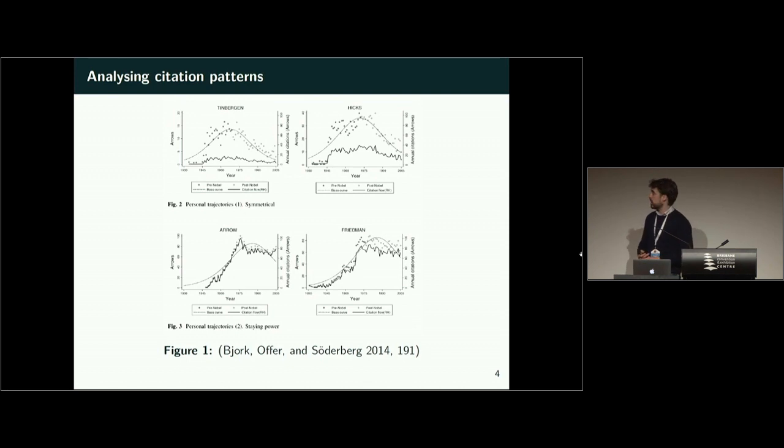And there are a few things what you can do with it. For example, you can do citation analysis. Björk Offen Söderberg analyzed citations for Nobel Prize winners within economics and they looked for certain patterns and found a few ones. Two are displayed here. First, the symmetrical one where the number of citations rises until the prize is awarded and decreases afterwards. And a second pattern where the number of citations stays roughly the same afterwards.